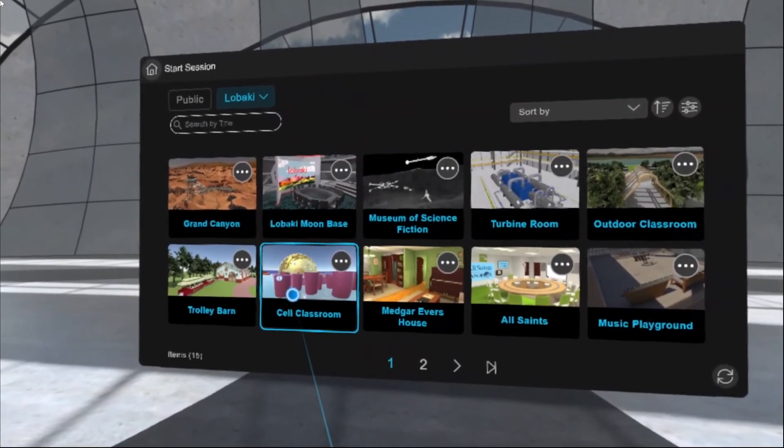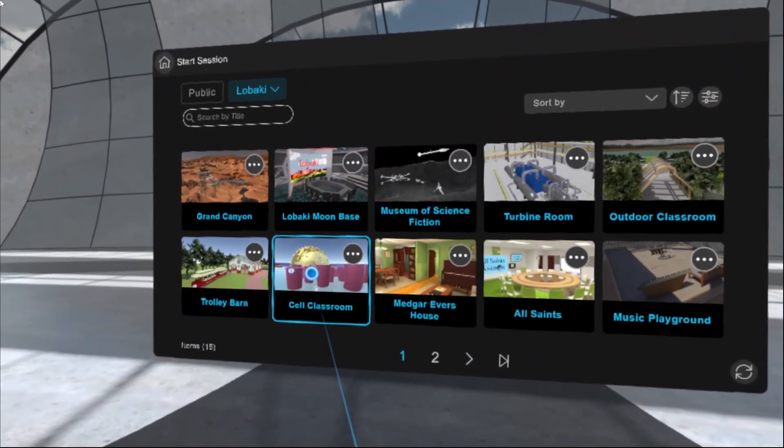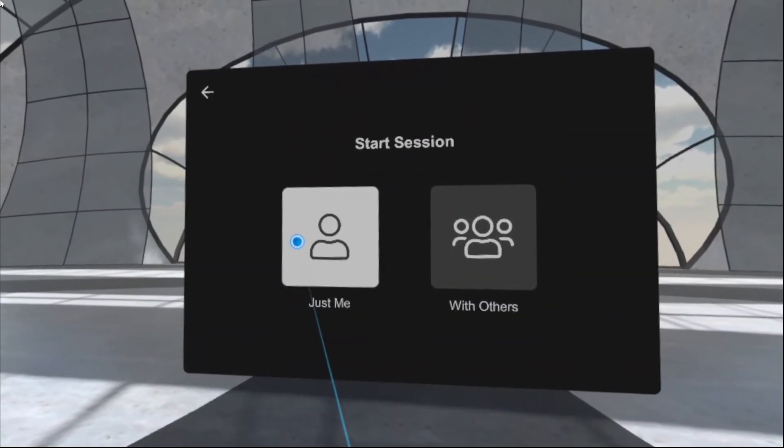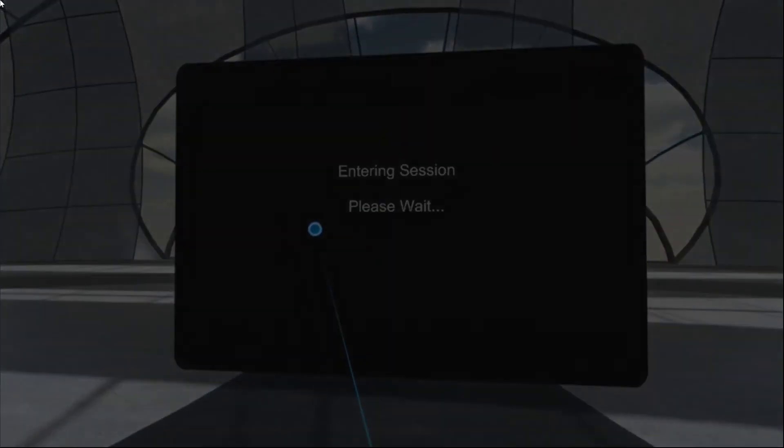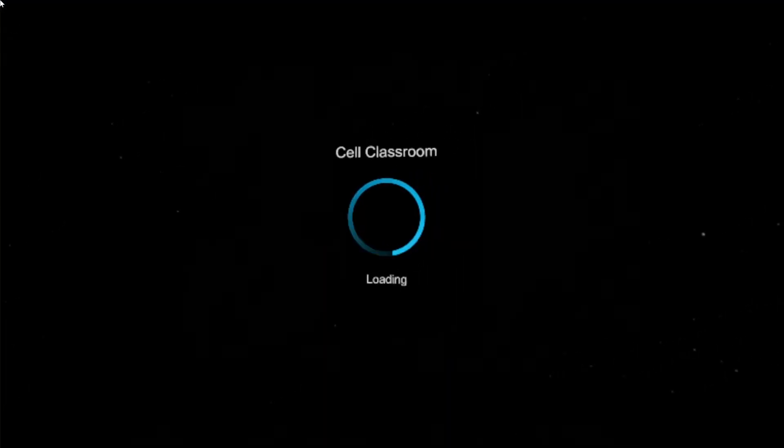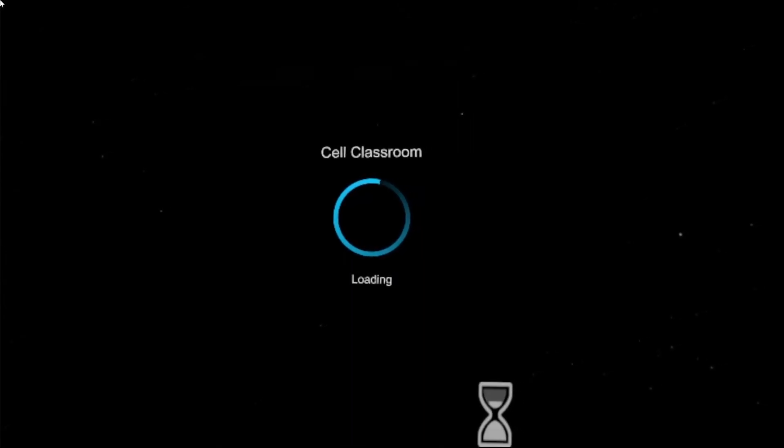So right here we've got our cell classroom location. I'll go ahead and click on this using that trigger button under my index finger. Then I'll click on just me since it's only me in the session for right now. And then our cell classroom location will load.